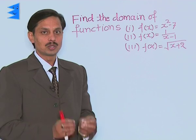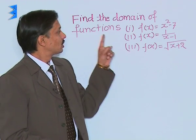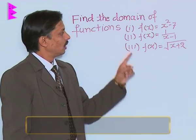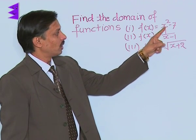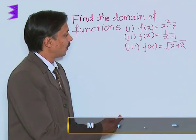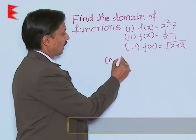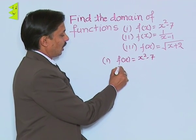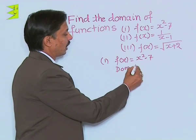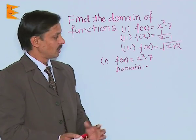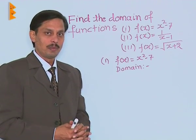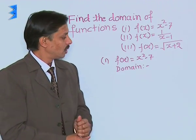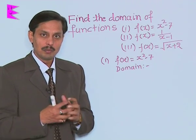I would like to tell you how to solve a few problems. Suppose the question is: find the domain of the following functions. The function is f(x) = x² - 7. To obtain the domain of any function, always remember it is the set of all possible values of x on which the function remains defined.